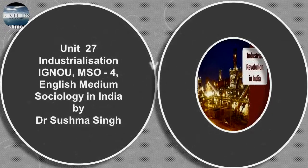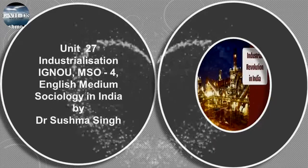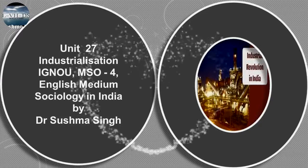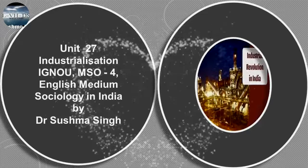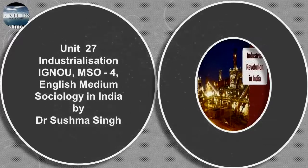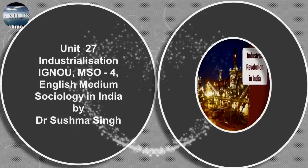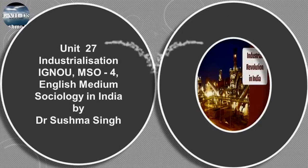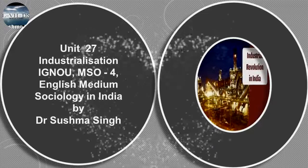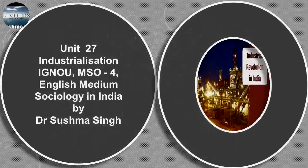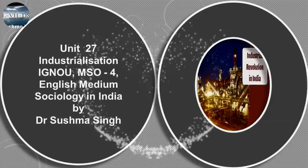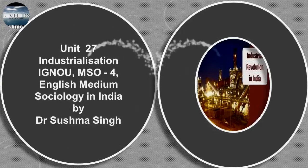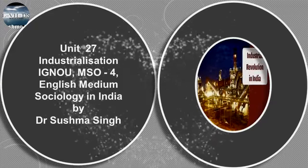Many social thinkers of the late 19th and early 20th century were seized of the changes that were brought about by industrialization and the characters that were part of these emerging societies. Thus, we find many early sociologists invariably contrasted earlier pre-industrial societies with industrial society, resulting in classification and typologies of society.